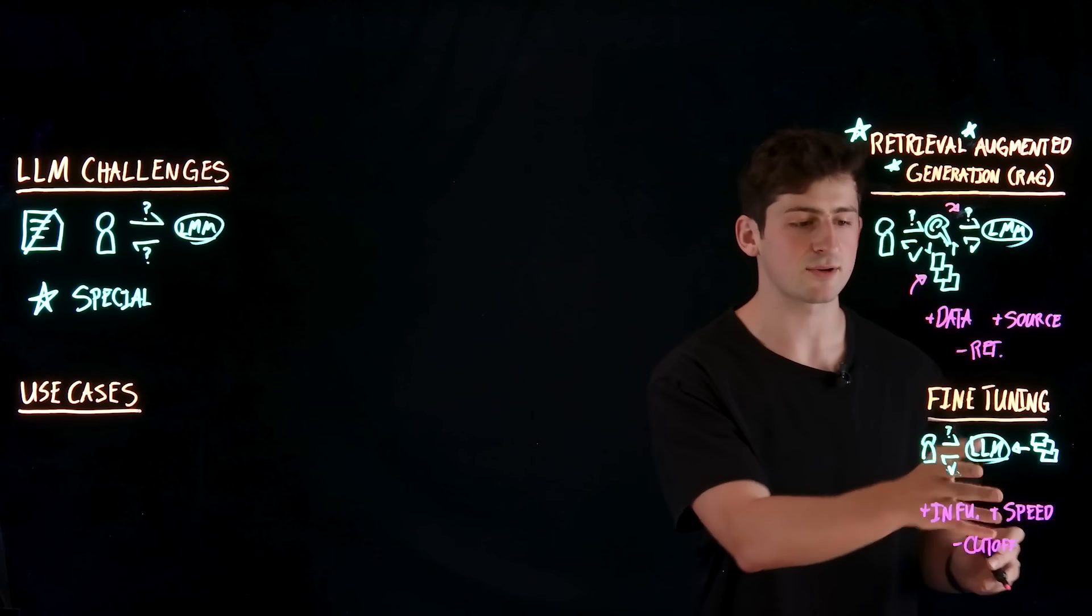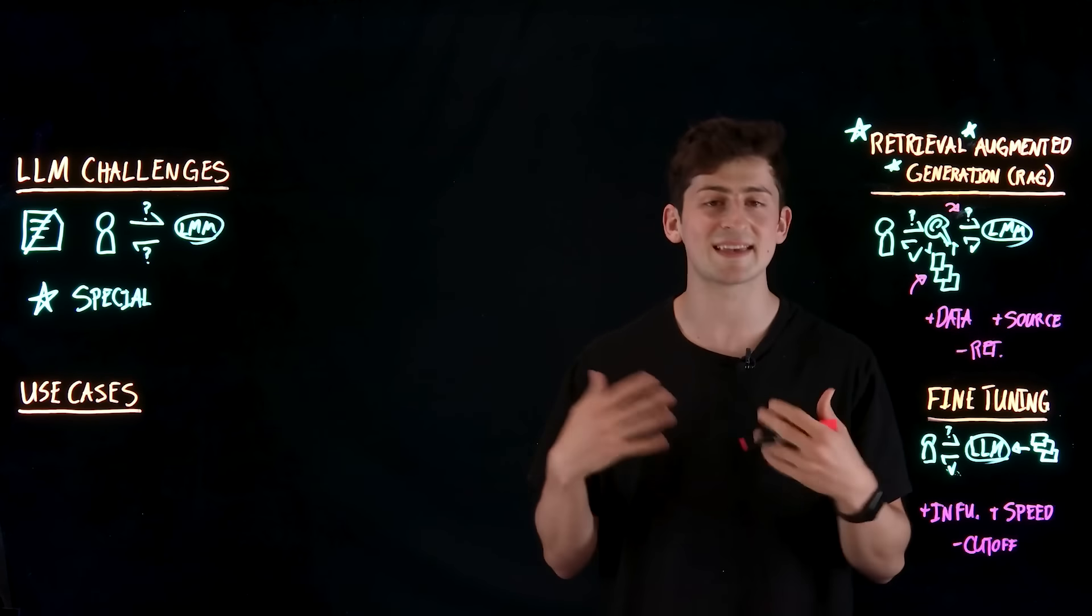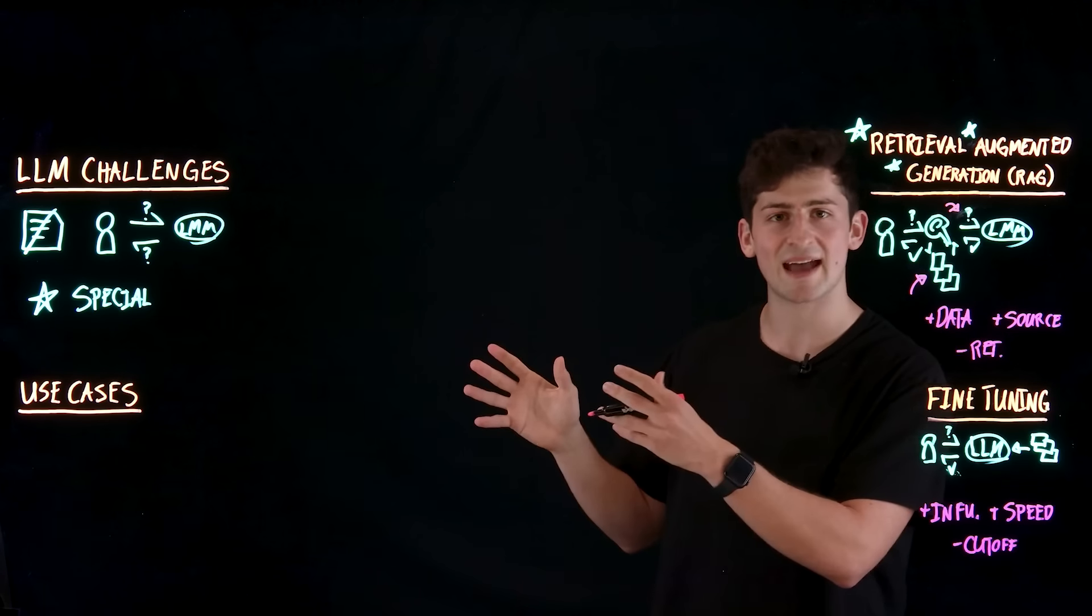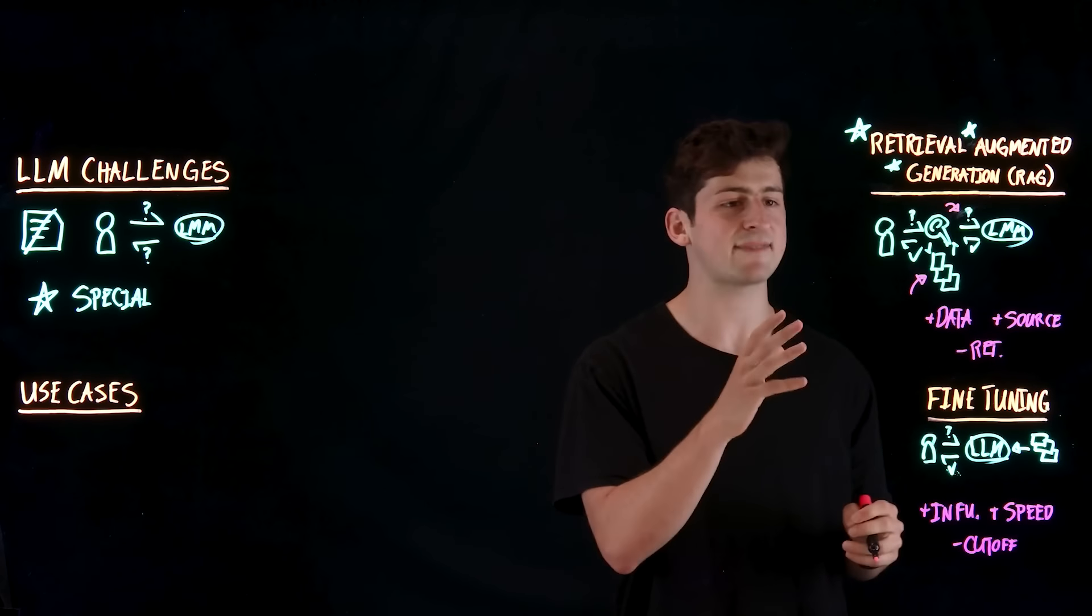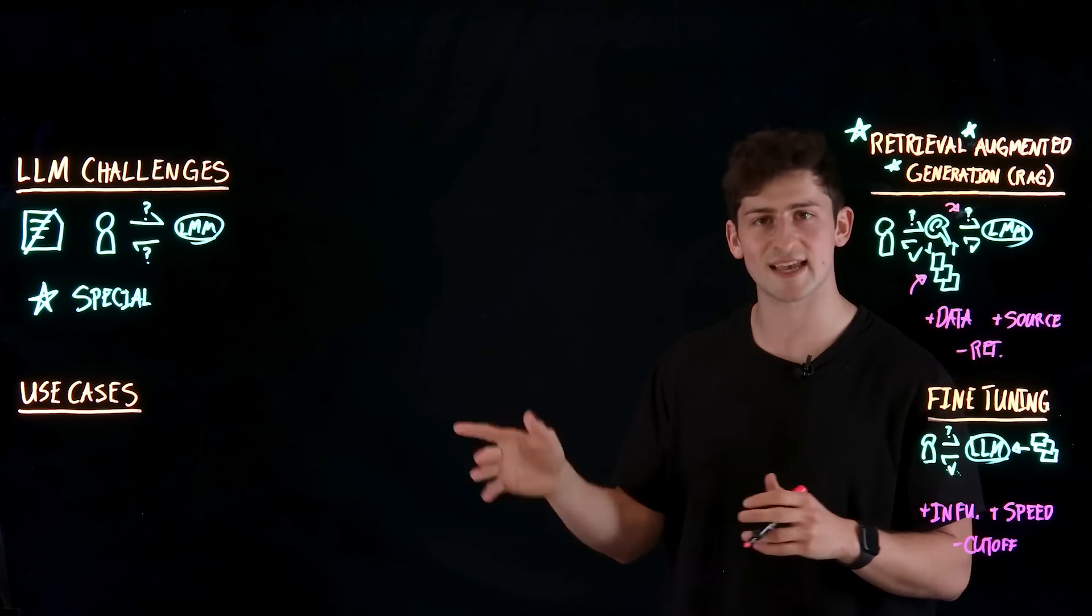So up until the point where the model is trained, well, after that, we have no more additional information that we can give to the model. So the same issue that we had with the World Cup example. So both of these have their strengths and weaknesses. But let's actually see this in some examples and use cases here.